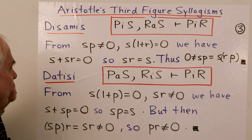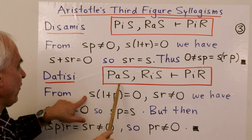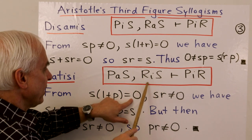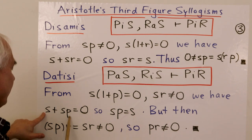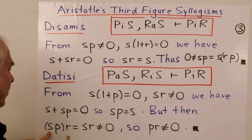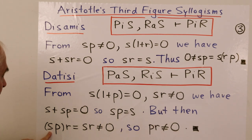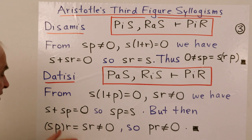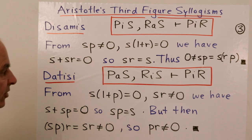Datisi is P-A-S with R-I-S implies P-I-R. The premises are S·(1 + P) = 0, giving S·P = S, and S·R ≠ 0. We look at S·P·R: since S·P = S, we can replace to get S·R, which we know is not equal to zero. Rearranging as S·(P·R), since the product of two things is non-zero both ingredients are non-zero, so we conclude P·R ≠ 0, which is P-I-R.